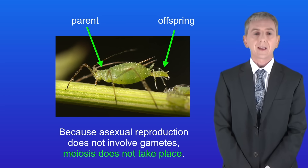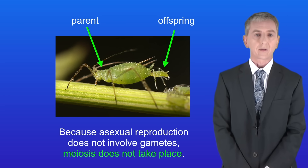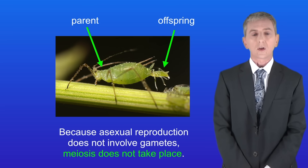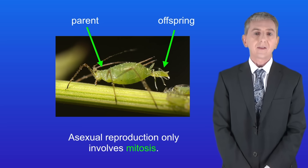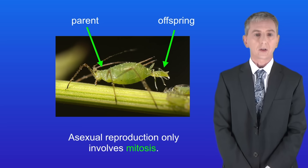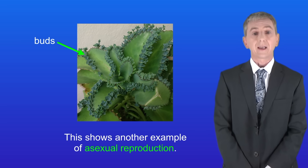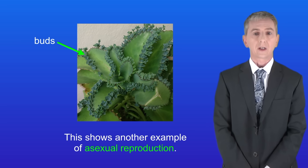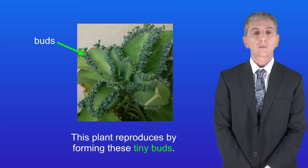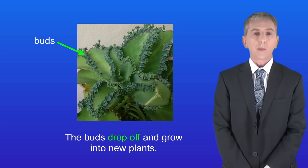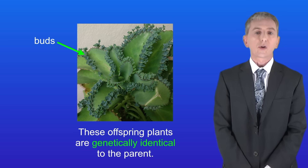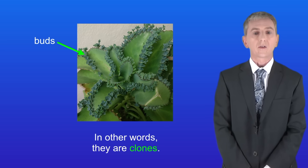Because asexual reproduction does not involve gametes, meiosis does not take place — asexual reproduction only involves mitosis. Here's another example of asexual reproduction: this plant reproduces by forming tiny buds. The buds drop off and grow into new plants. The offspring plants are genetically identical to the parent — in other words they're clones.